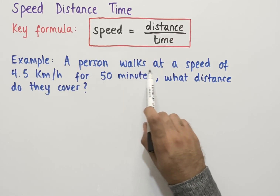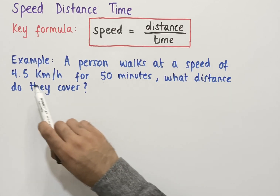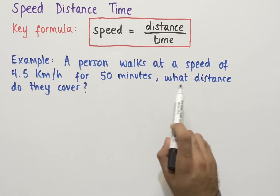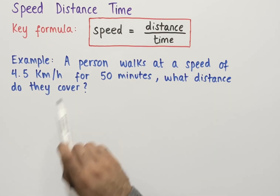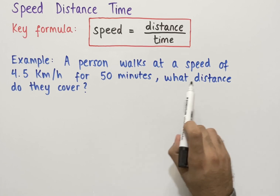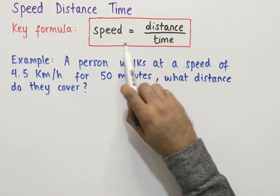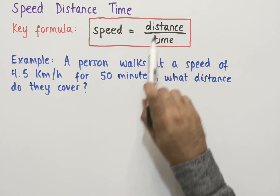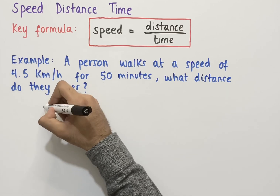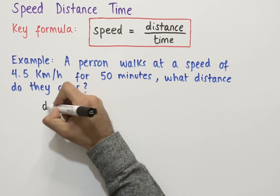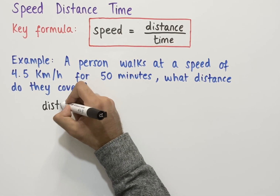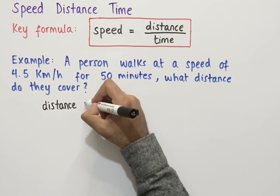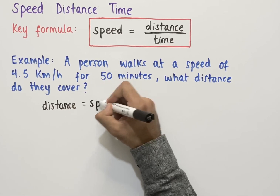For our final example, a person walks at a speed of 4.5 kilometers per hour for 50 minutes. What distance do they cover? Since we're trying to work out distance, we rearrange the formula so distance is the subject — that is, distance equals speed multiplied by time.